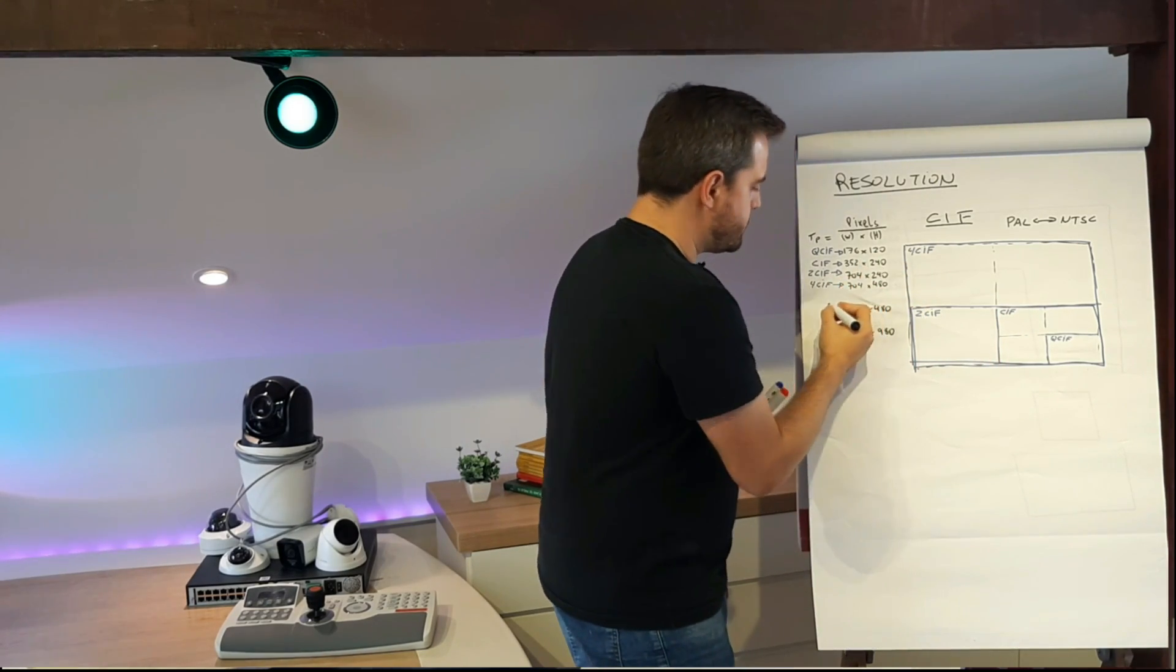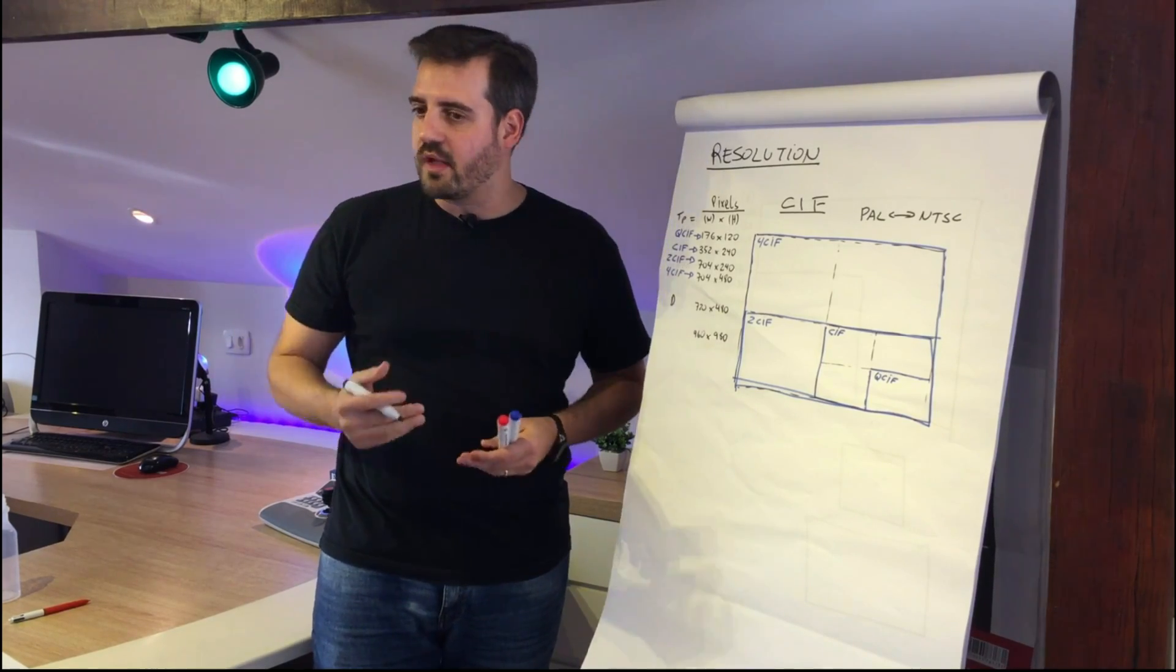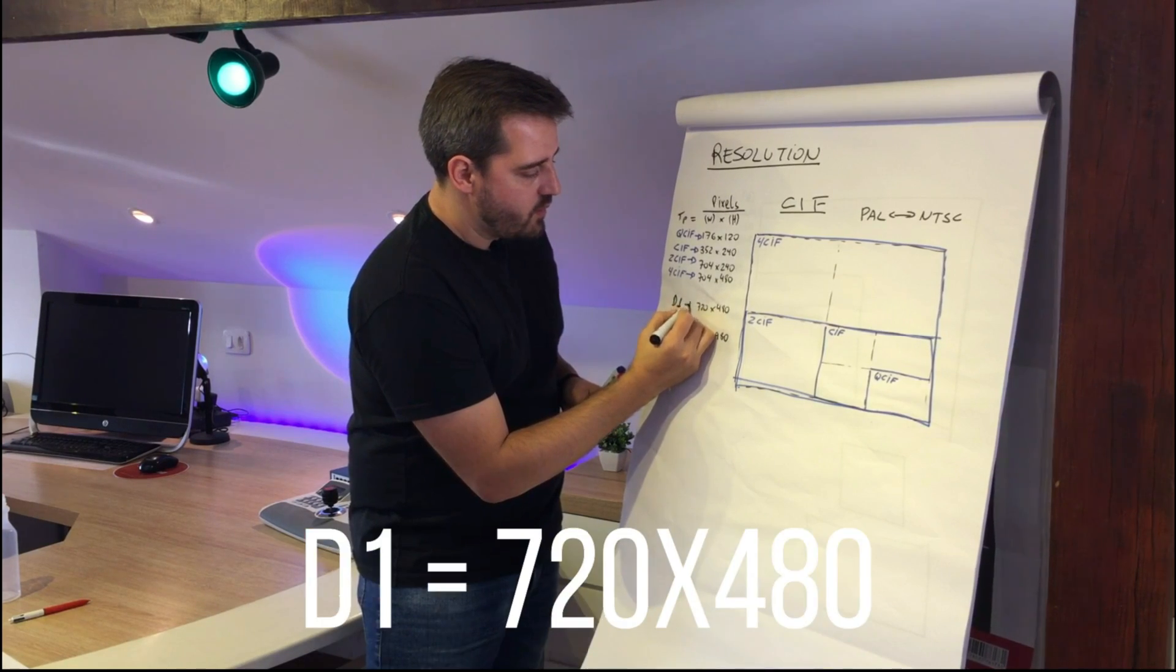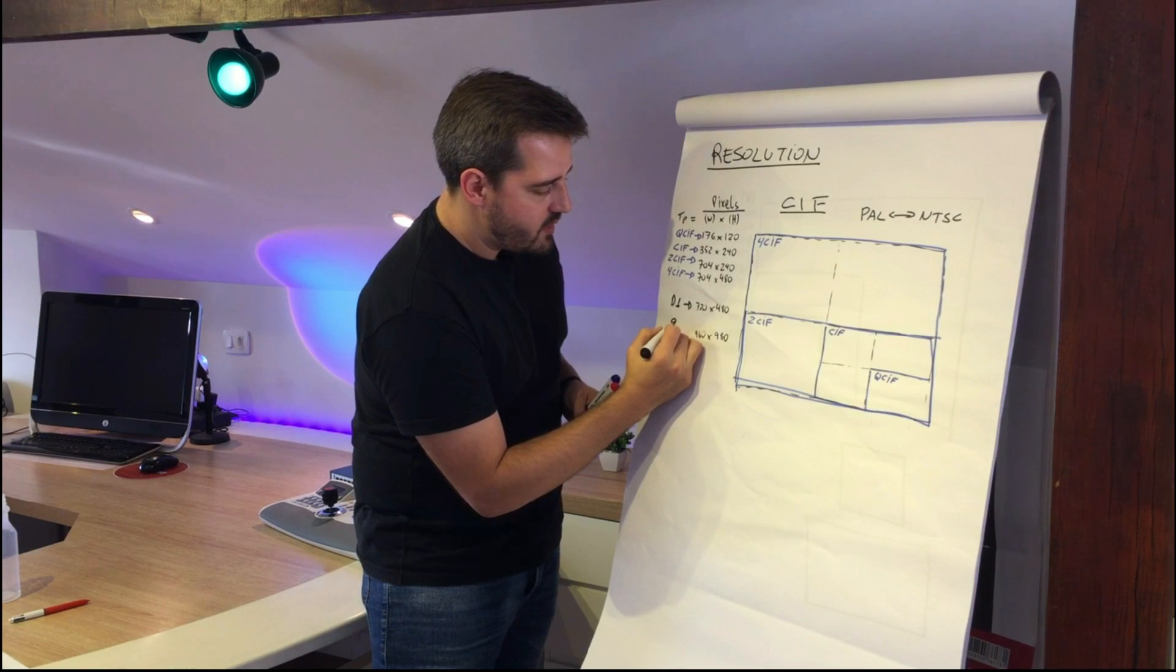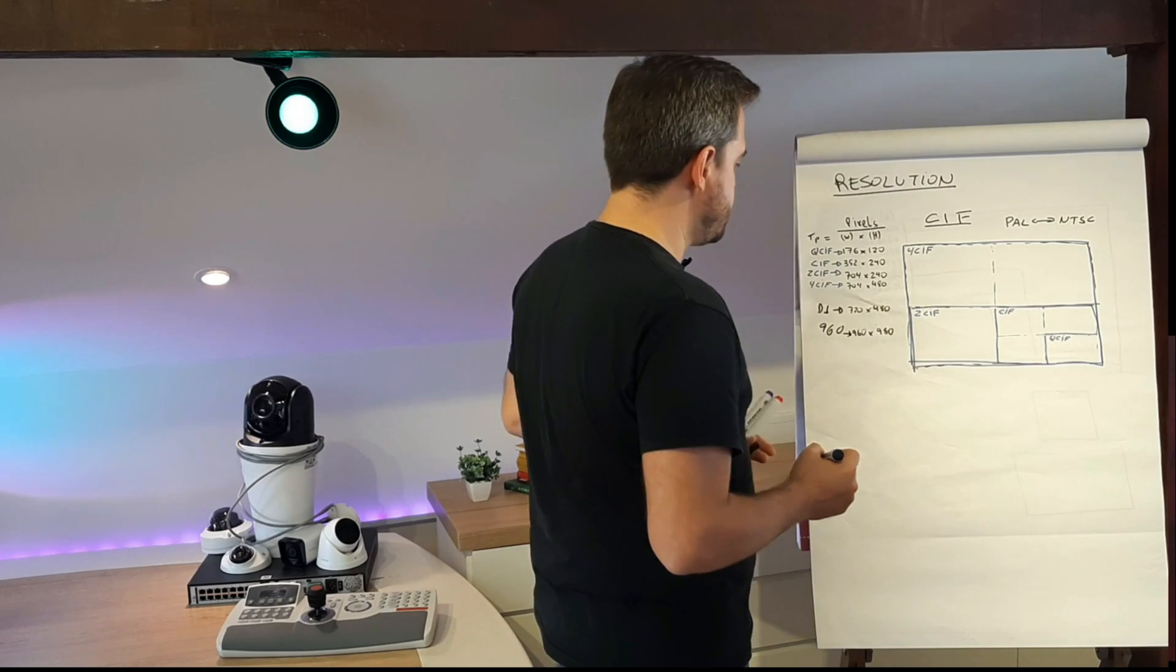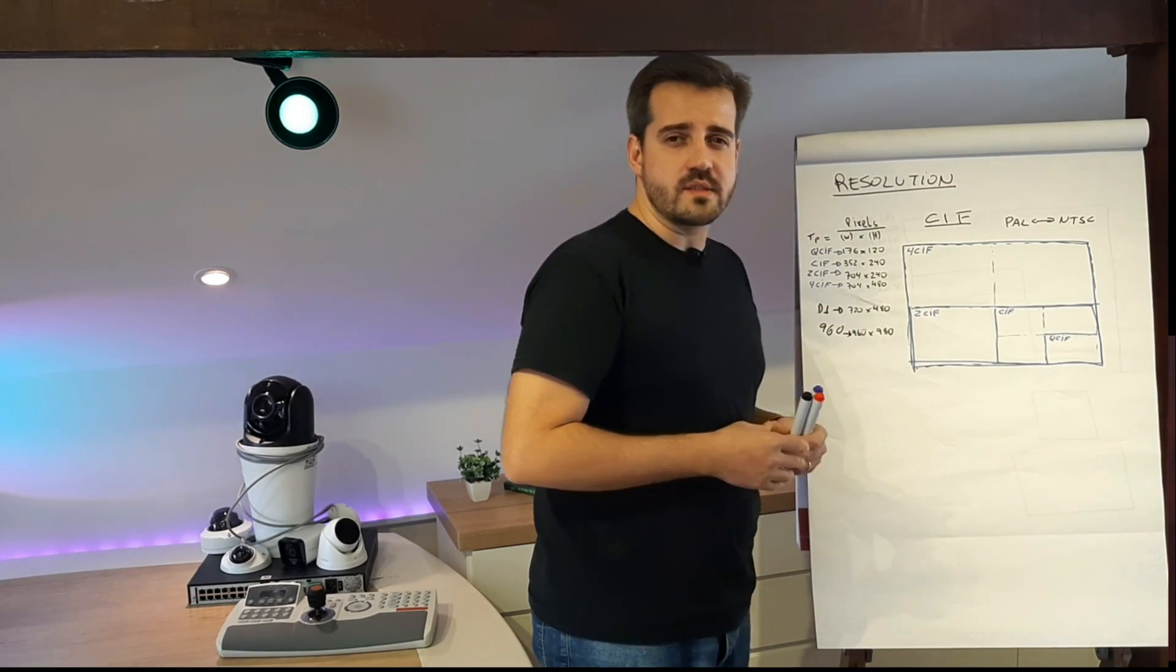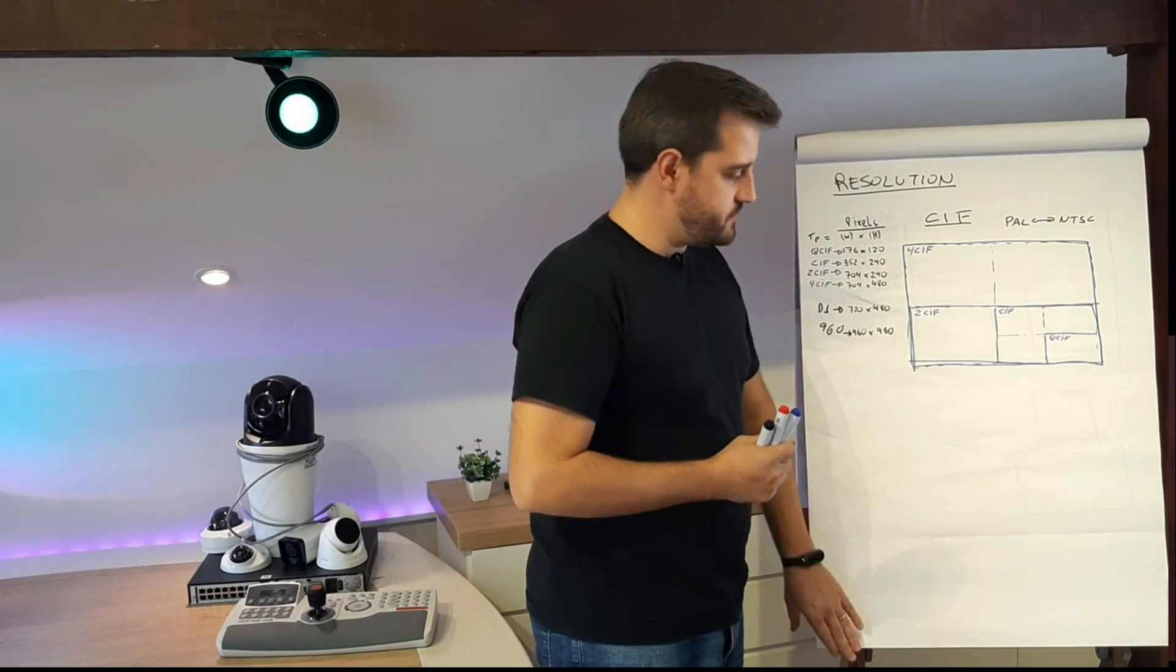The most common one that we use for like substream, which is the stream that we don't have like a higher resolution, is the D1, which is 720 by 480. And we have the 960, which is 960 by 480. So basically these are resolutions that we can consider more for analog systems or very low resolutions that we can use in the substream.